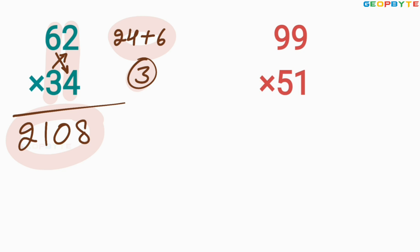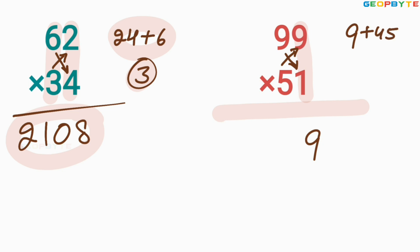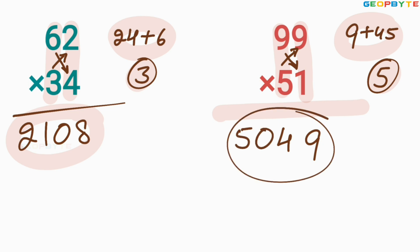Similarly, 99 into 51. First, multiply 9 and 1 is 9. Cross multiplication: 9 into 1 is 9, plus 9 into 5 is 45 — equals 54, plus 9 is 54. Write 4 here, 5 balance. Then multiply 9 and 5: 45, plus balance 5 is 50. Write 50 here. You are getting the answer just in seconds.